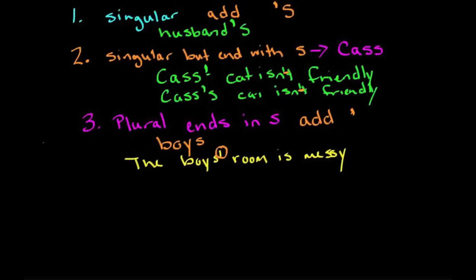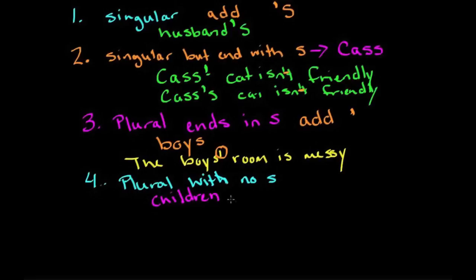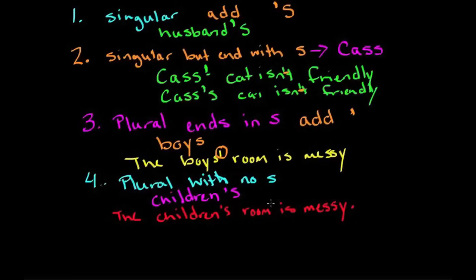So here you can see we put it at the end. Now the final example, the fourth rule, the fourth rule about this is when it's plural with no S. So we're going to use the same example except with children. So for example, children is plural. Children is plural, but it doesn't end in an S. So what we do is we add our apostrophe S. So we say, for example, the children's room is messy. So we add that apostrophe S.